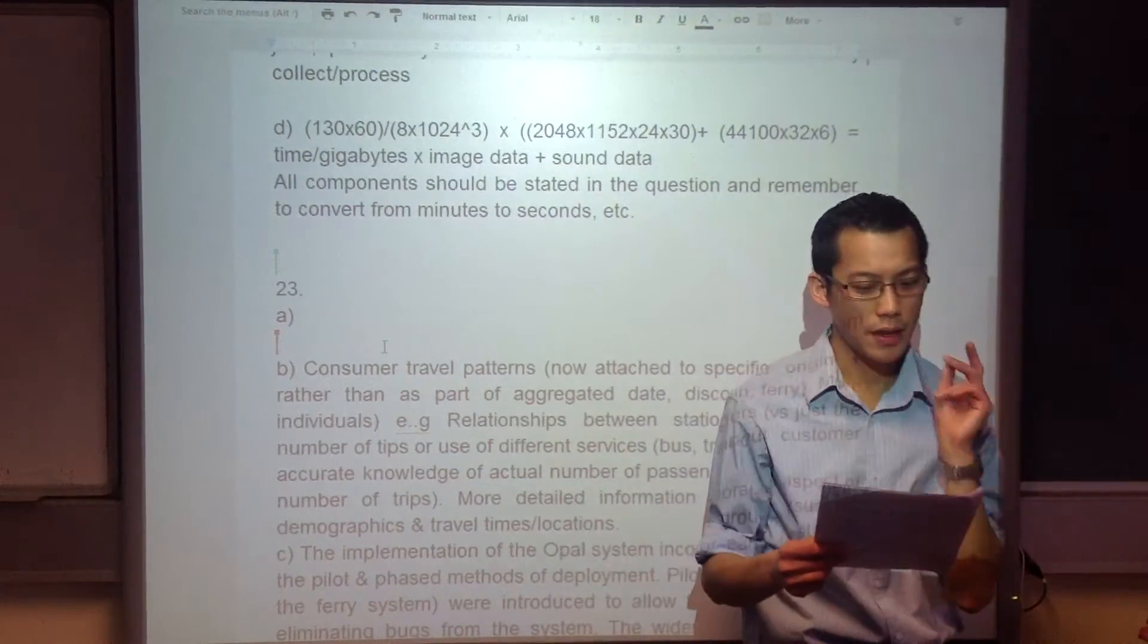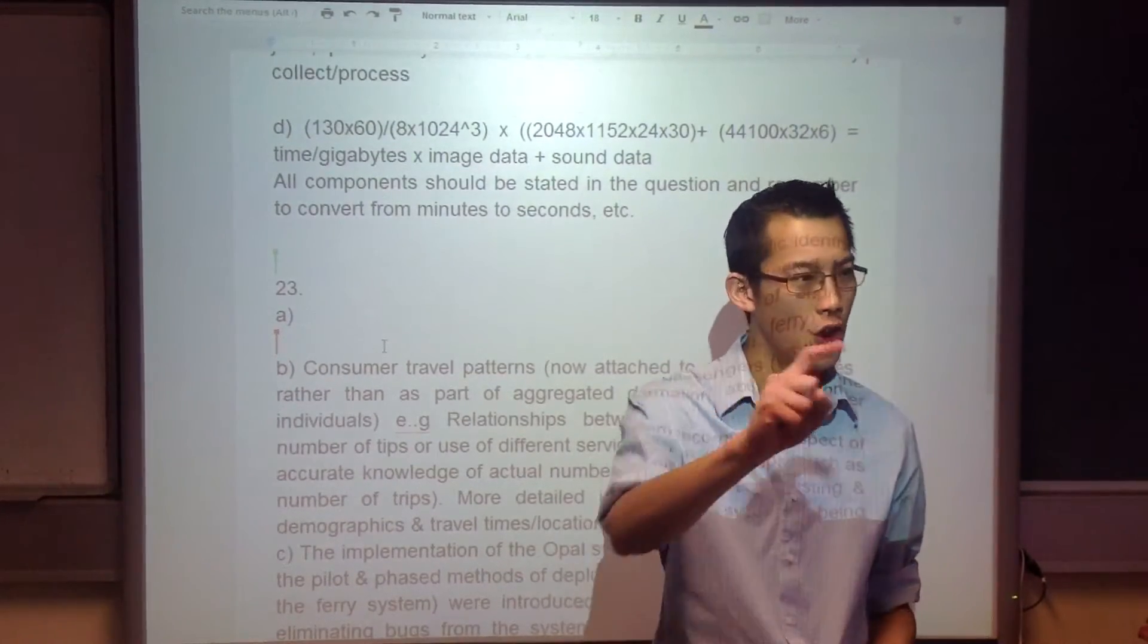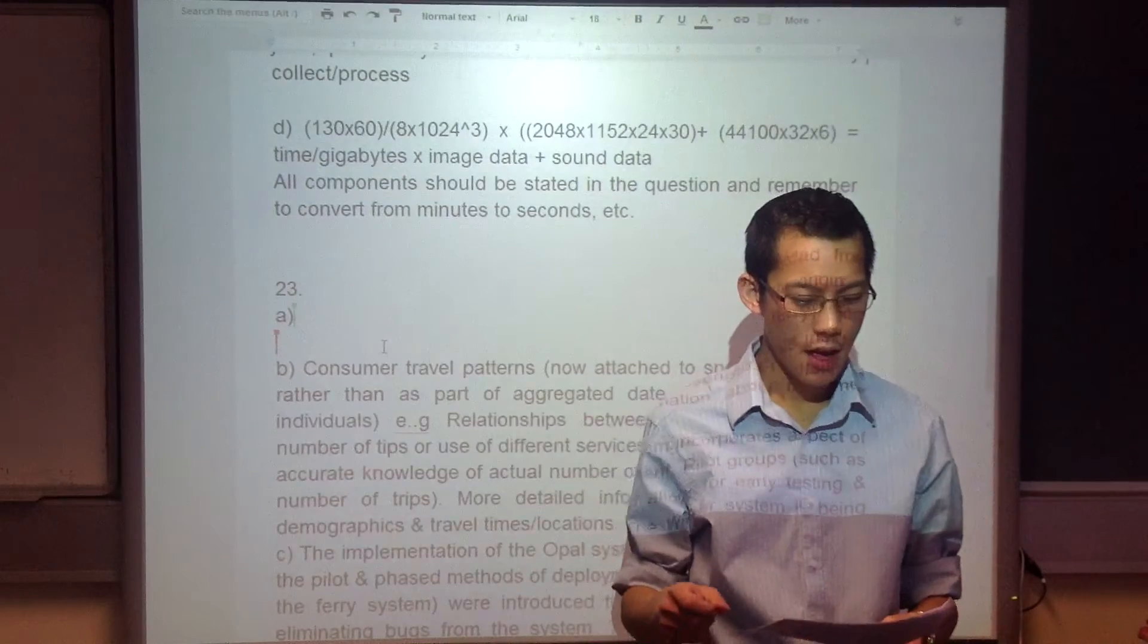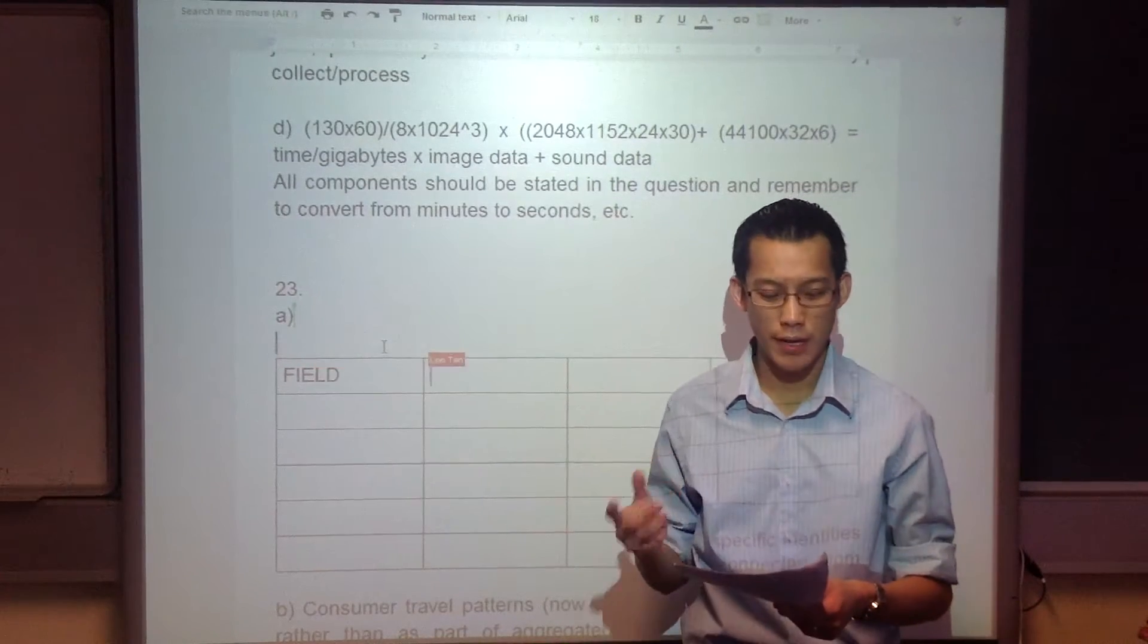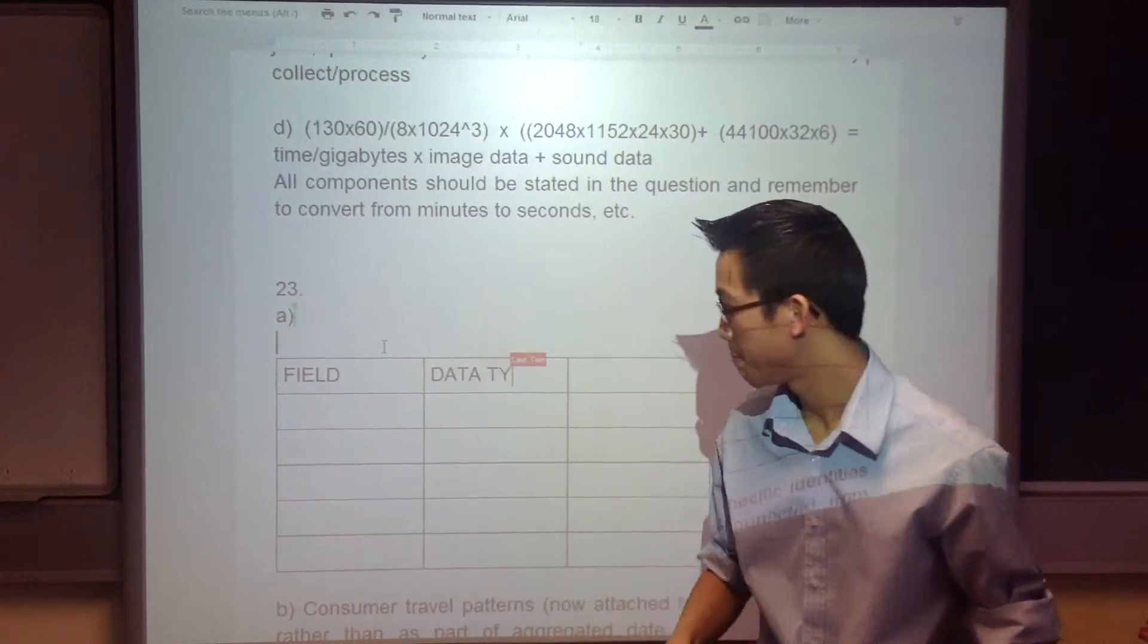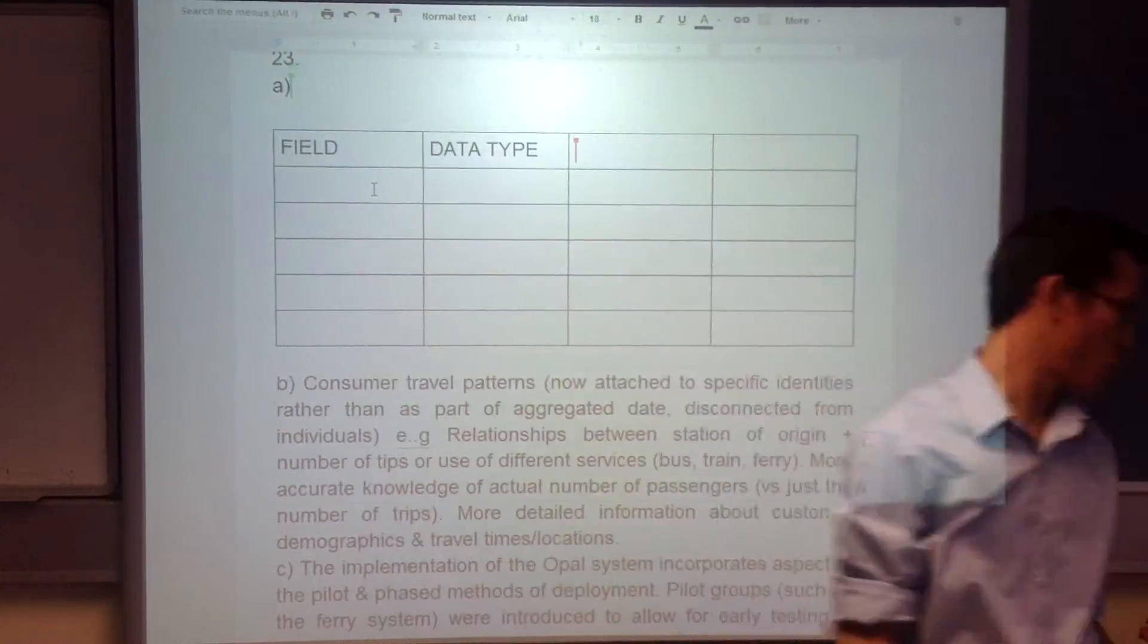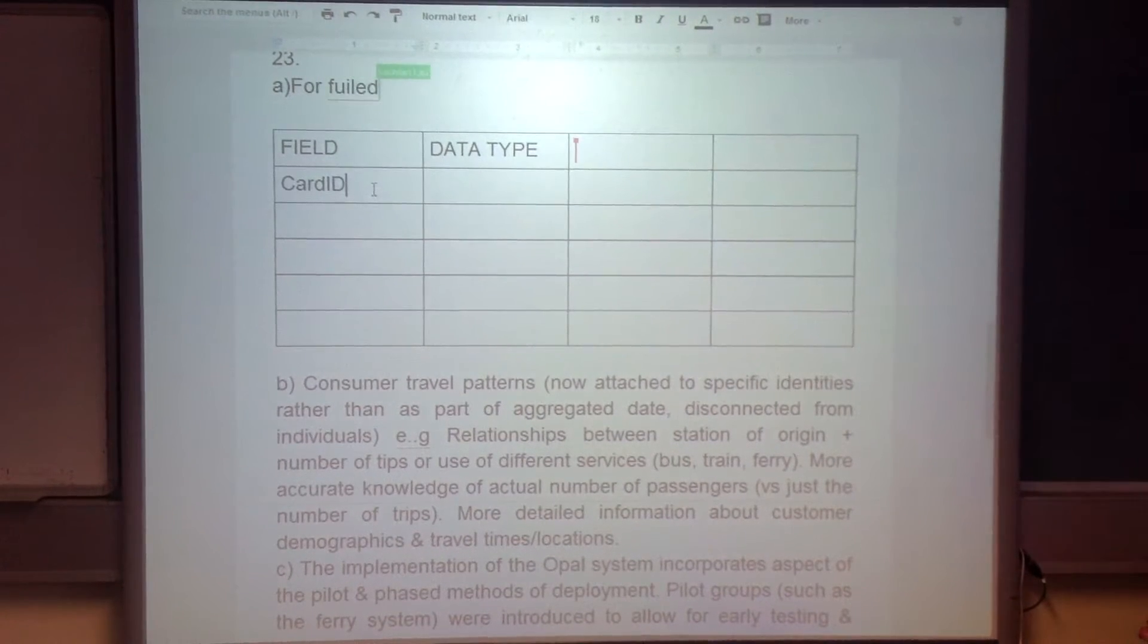Now, let's talk about the fields. Firstly, I admit, this is probably my fault, so I didn't deduct marks for this, but a note for you guys later, if you want to jot this down. The names of the fields, they really ought to be single words, no spaces. So things like card ID, I would write it like this, cardID.